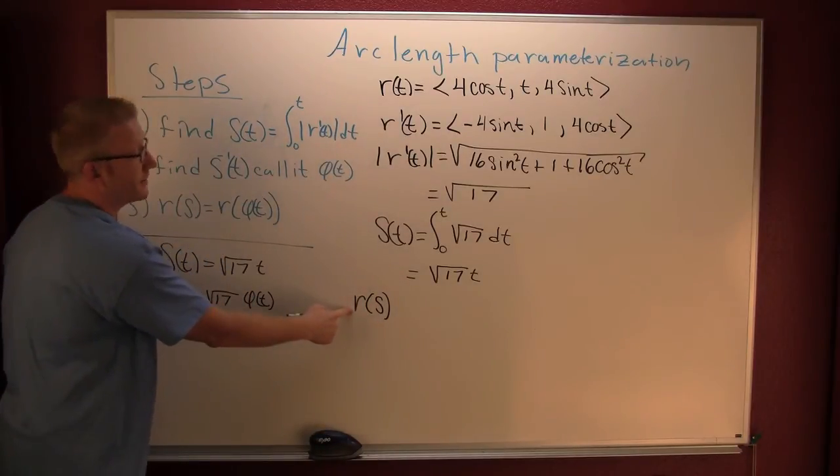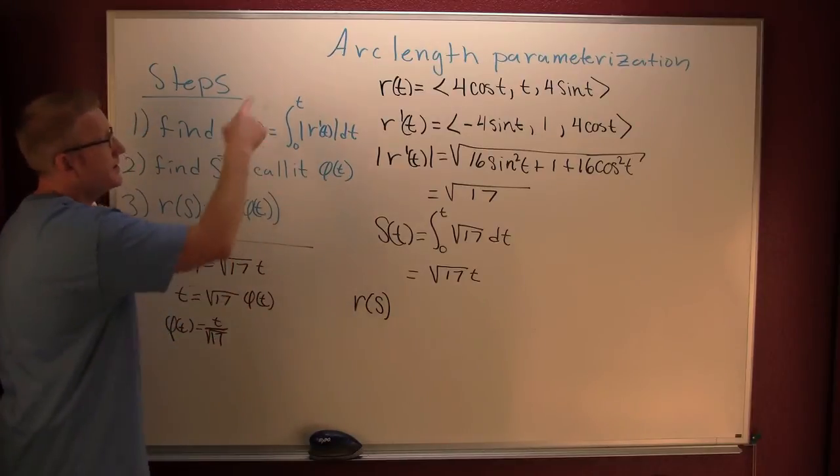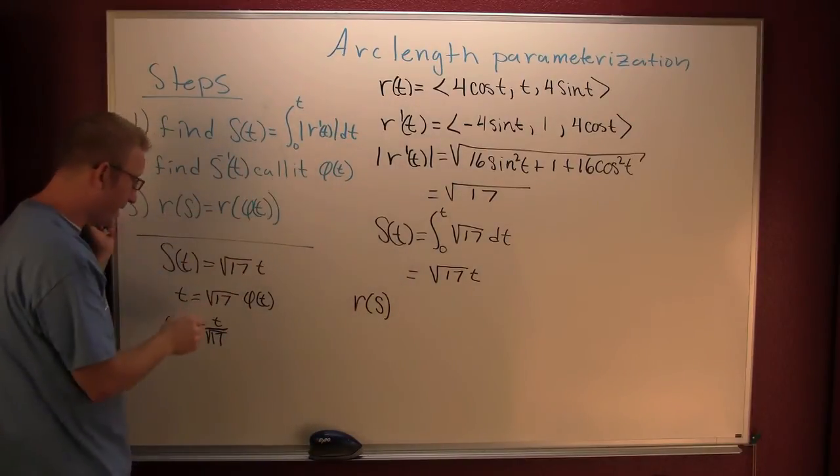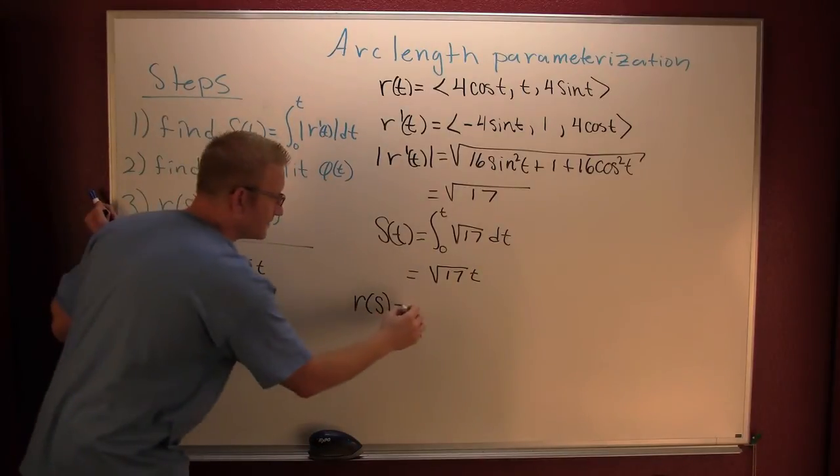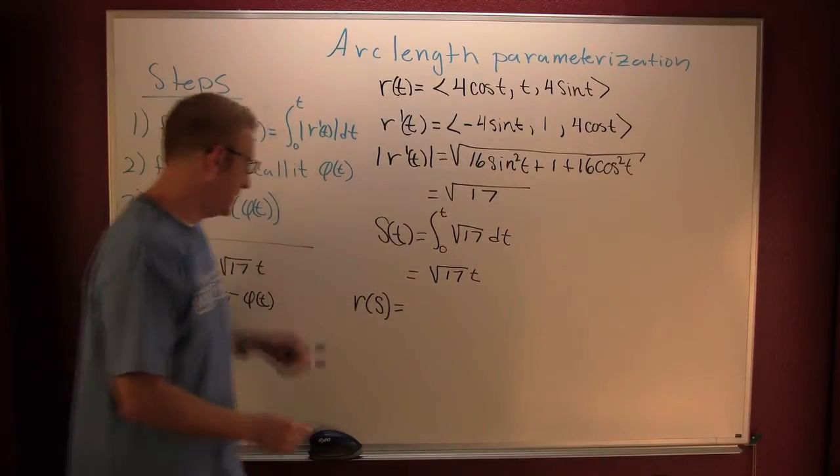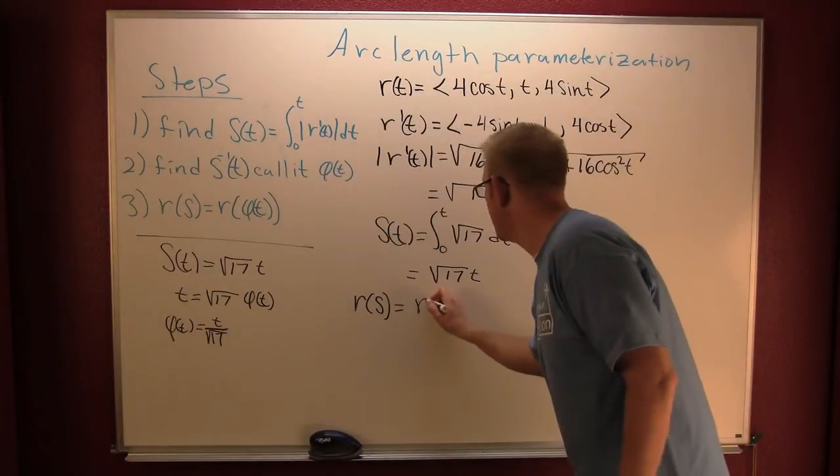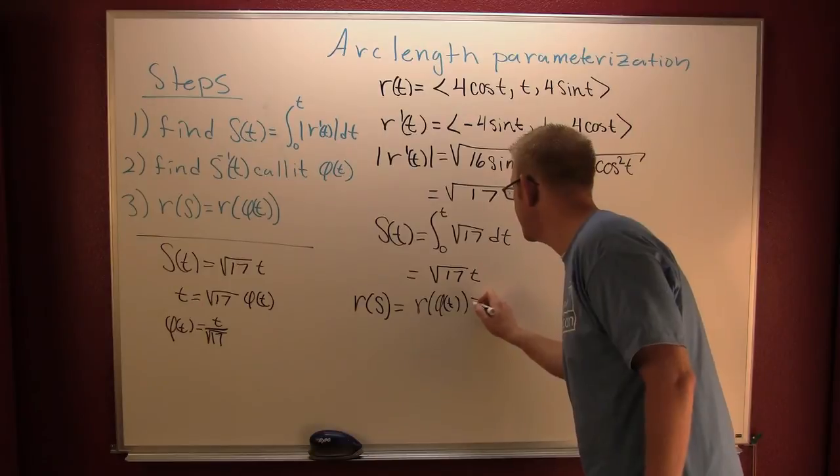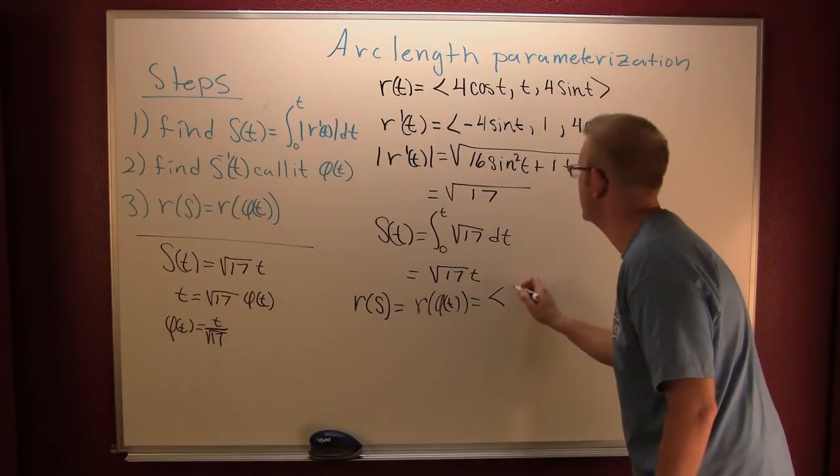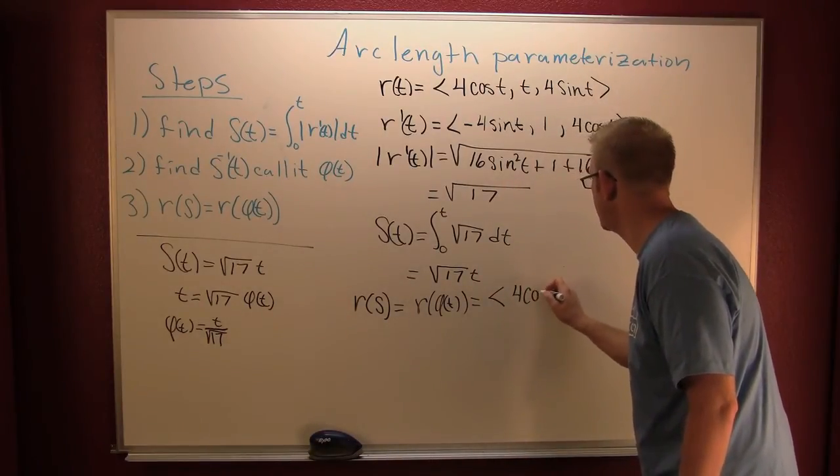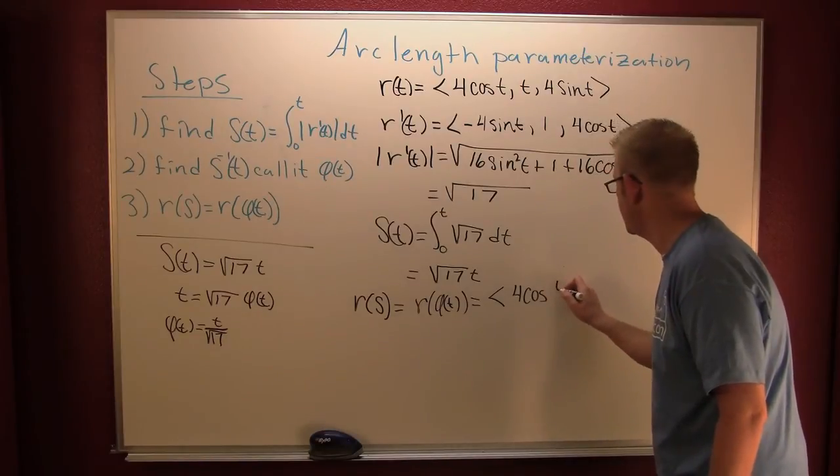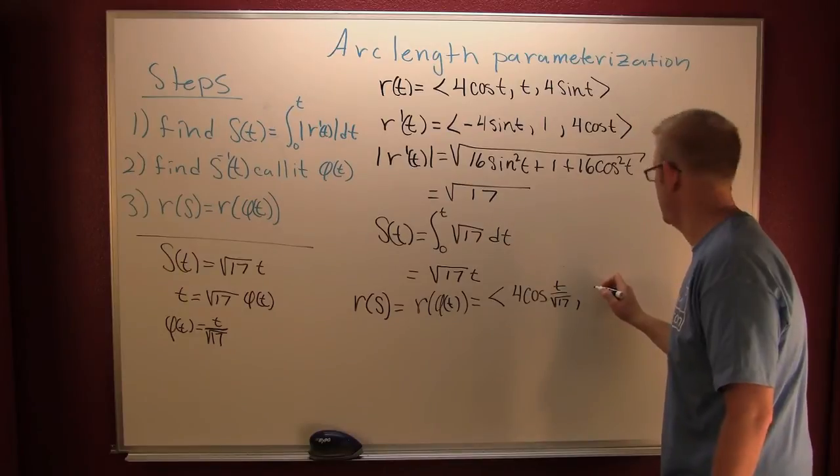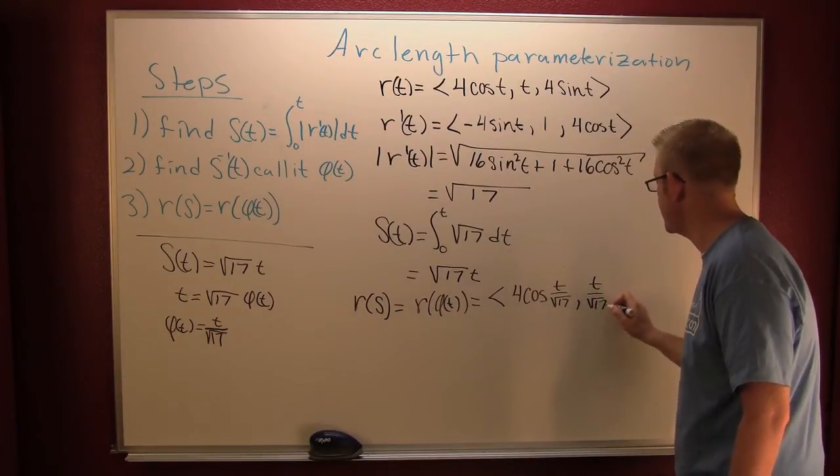My arc length parameterization is my original vector value function evaluated at the inverse of the arc length. So this is r(φ(t)), which happens to be 4 cosine(t/√17), t/√17...